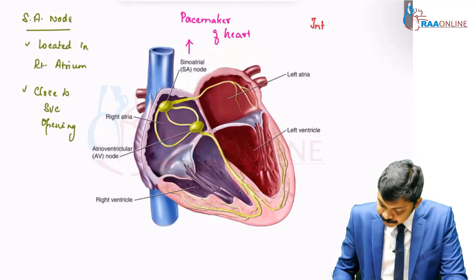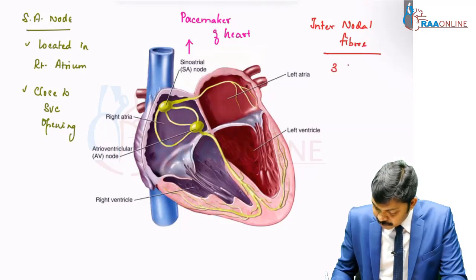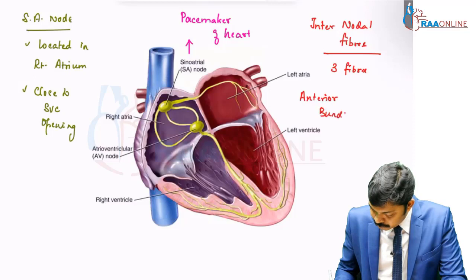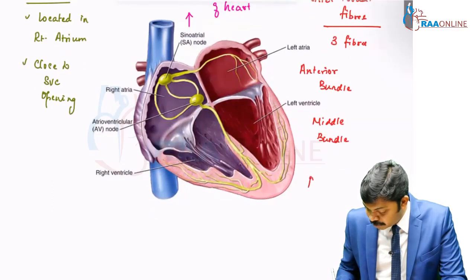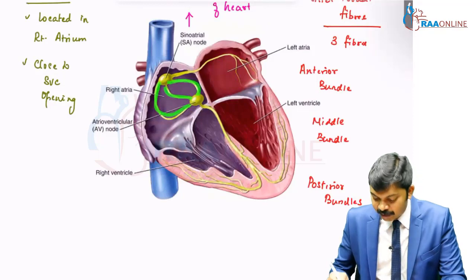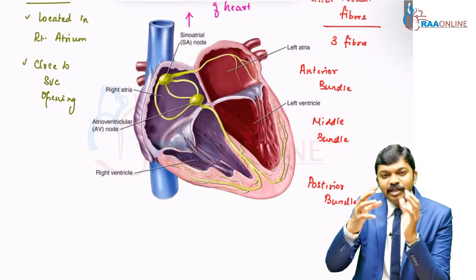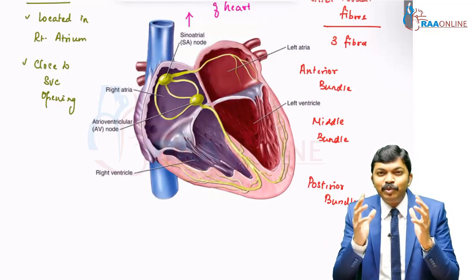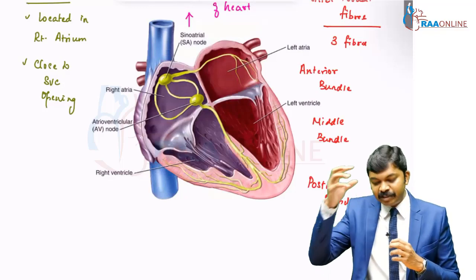There are three kinds of internodal fibers. The first one is the anterior bundle, the second is the middle bundle, and the third is the posterior bundle. As you can see in this picture, there is the anterior bundle, middle bundle, and posterior bundle. Please understand they are not arranged parallel to each other — they are arranged in front of each other, as a three-dimensional representation. The anterior bundle, middle bundle, and posterior bundle carry current from the sinoatrial node all the way to the AV node.